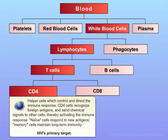CD4 cells are called helper cells. These are cells that can control and direct the immune response. CD4 cells recognize foreign antigens and can send chemical signals to other cells, thereby activating the immune system.